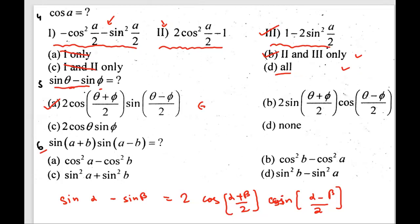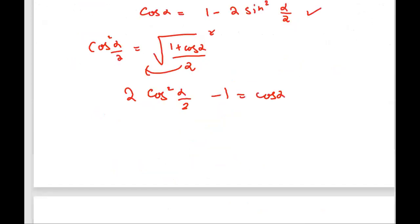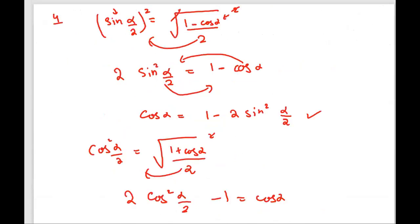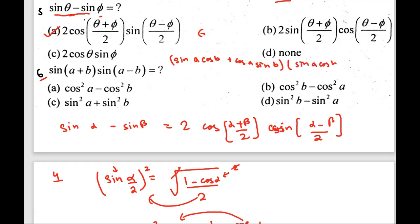The sixth question: sin(a + b) multiplied by sin(a − b). We expand sin(a + b) as sin a cos b plus cos a sin b. Then sin(a − b) is sin a cos b minus cos a sin b. We can think of these as (sin a cos b + cos a sin b)(sin a cos b − cos a sin b), which is of the form (x + y)(x − y) = x² − y².